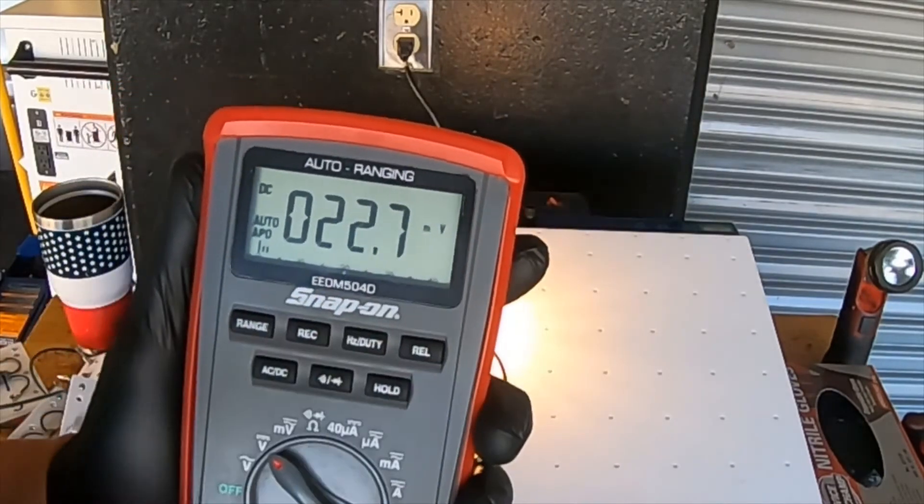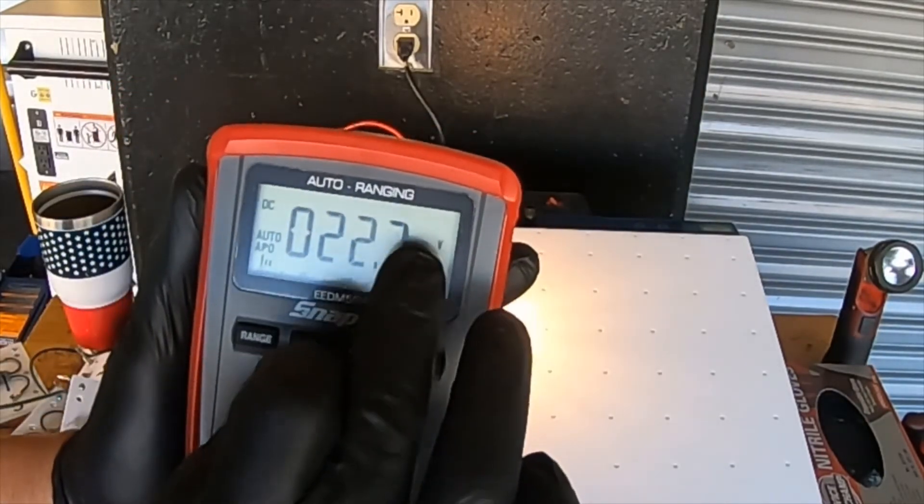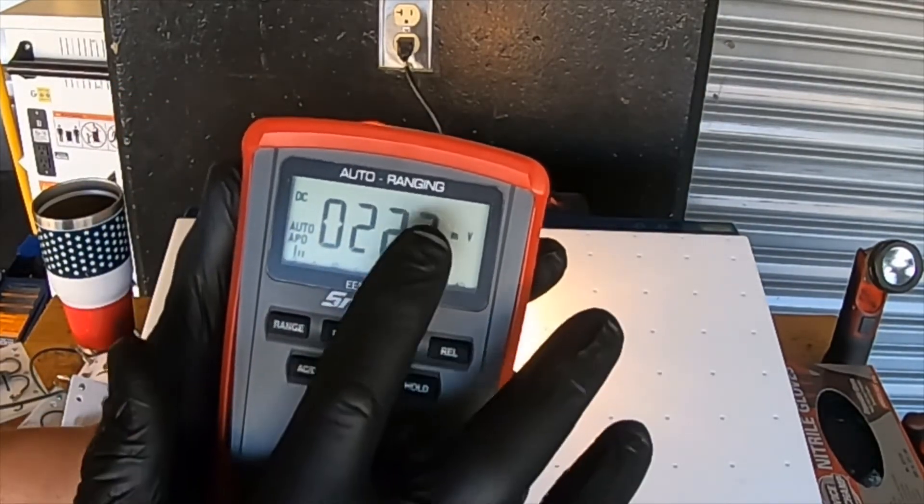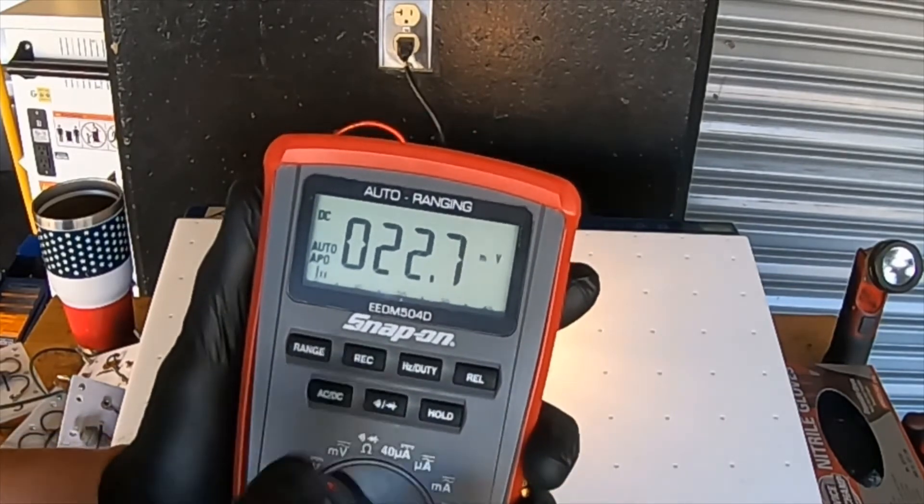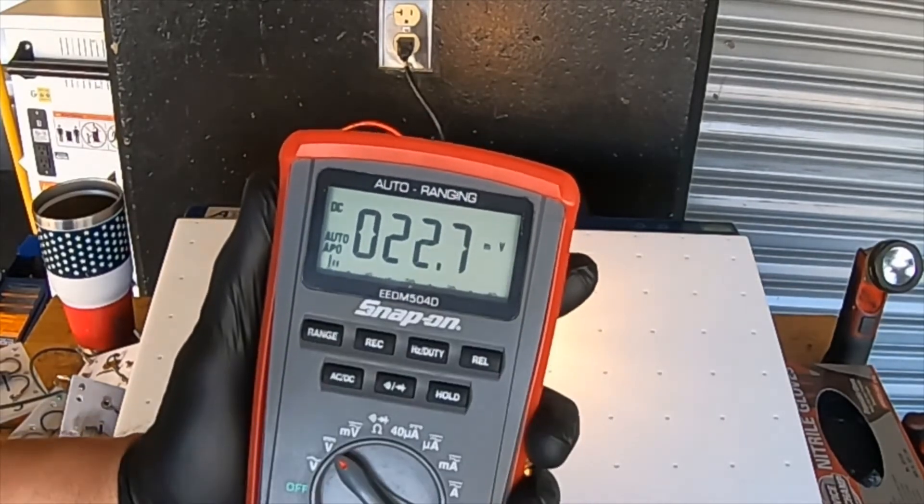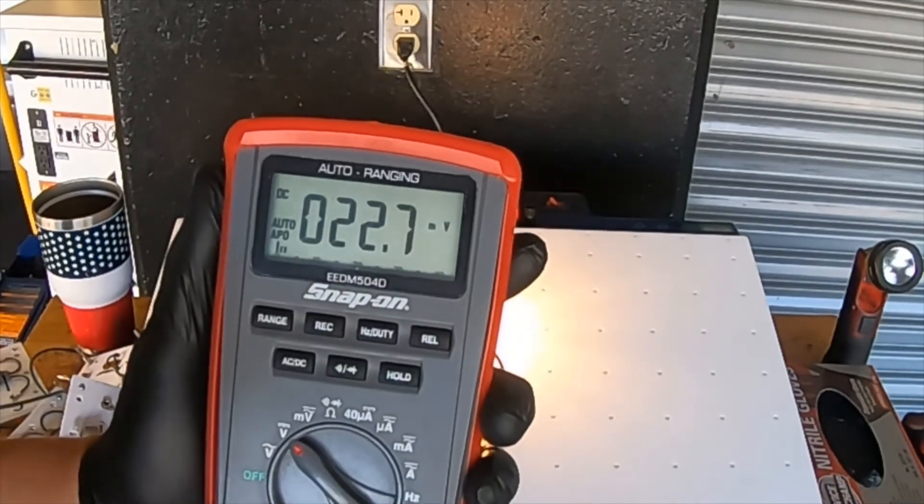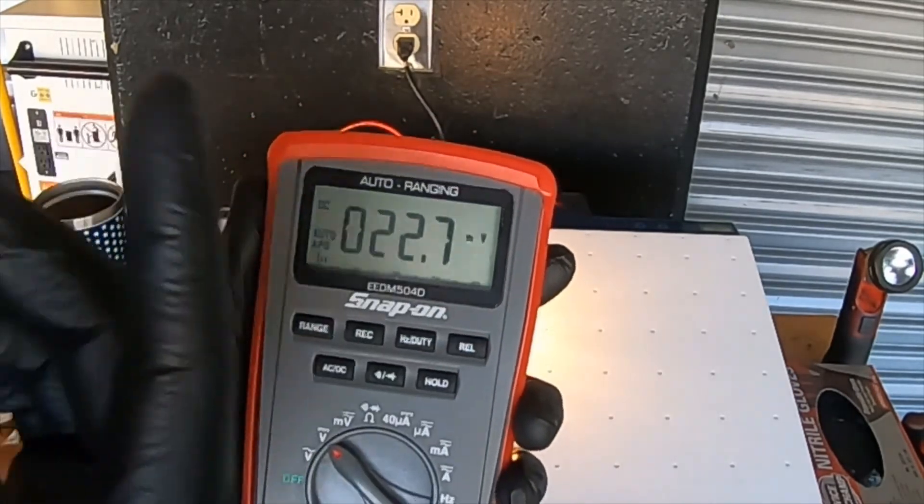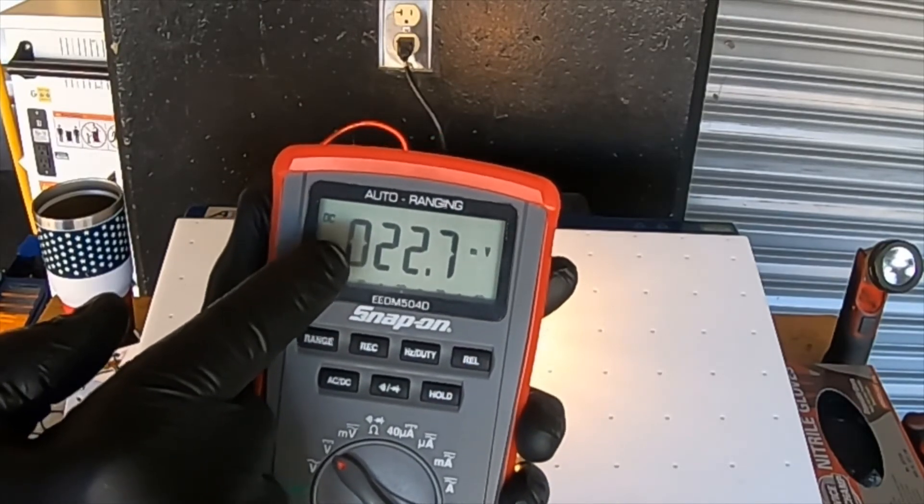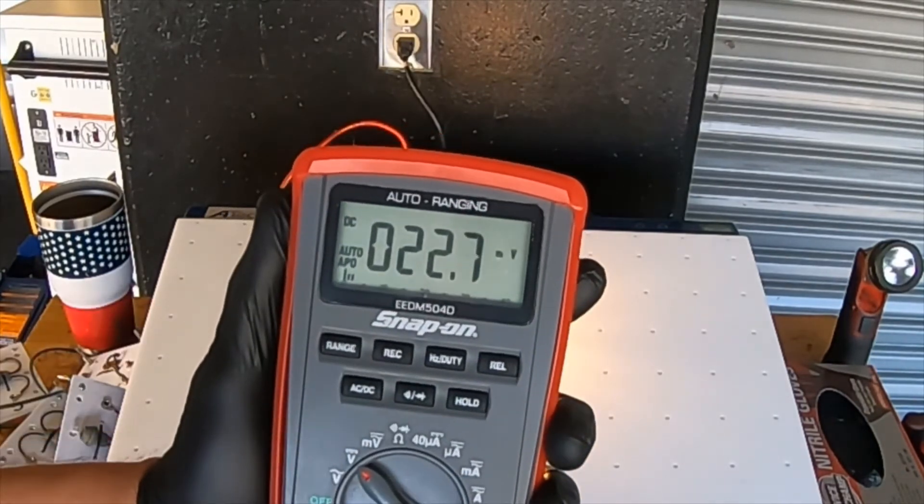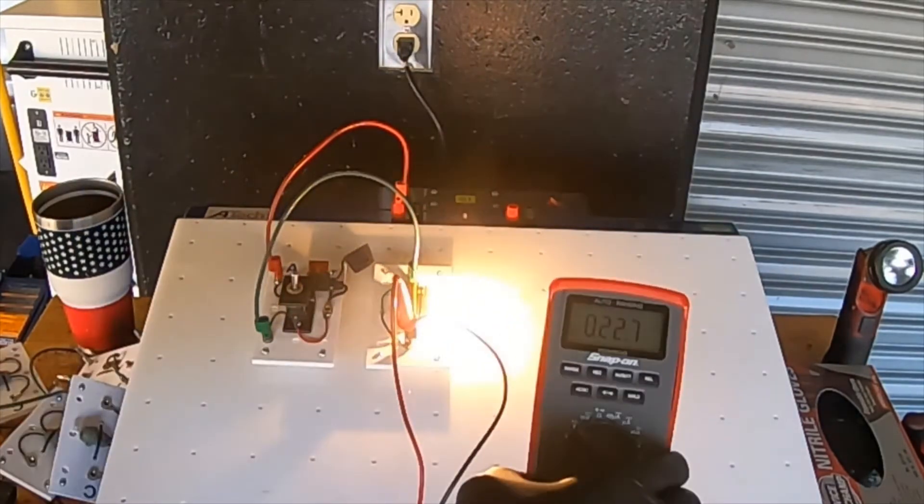One thing that is important is whenever you are reading a meter to pay attention to the designation next to it. It is either going to have a big V for volts or a small M and a big V for millivolts or thousandths of a volt. So if we were to look at this in volts, we would actually have 0.0227 voltage drop, which is well within the specification.